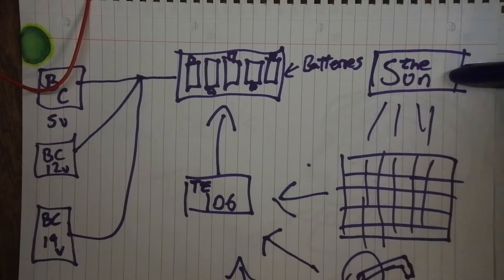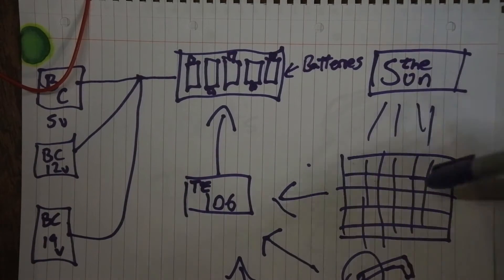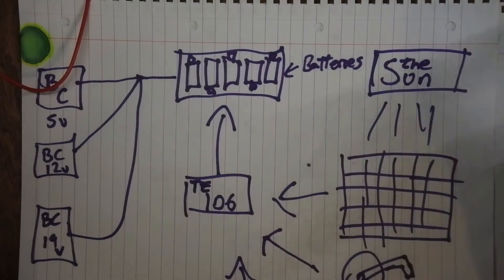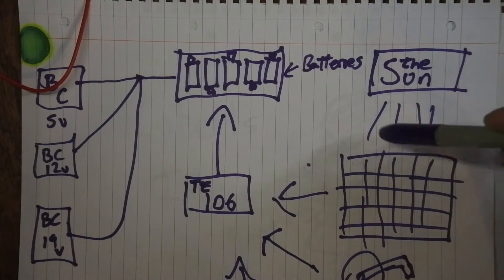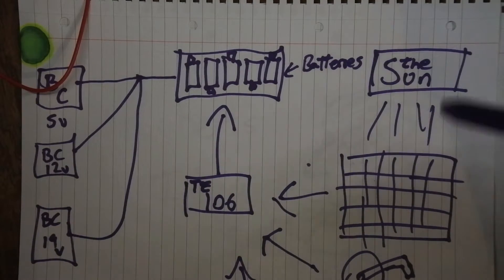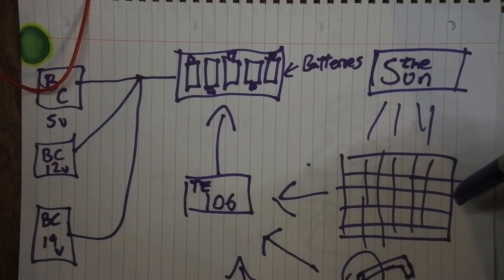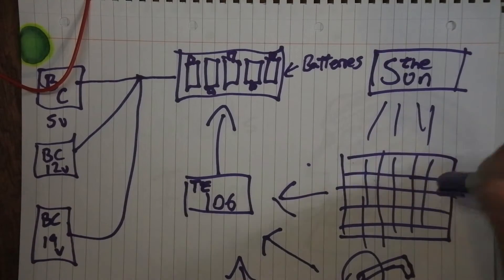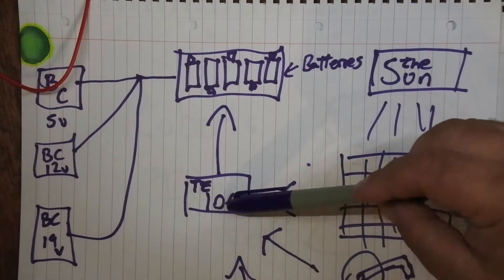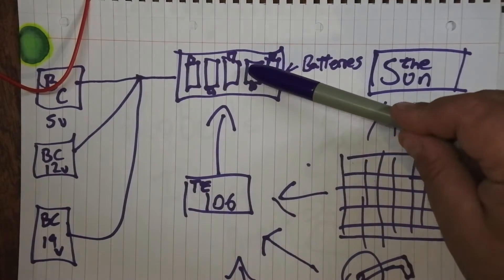So I've got the sun here coming in and there's a solar panel, but I don't just want solar panel to be able to charge this. So I'll just go for the whole diagram before explaining it. Sun comes into a solar panel, solar panel is connected to the USB of the TE106 that goes into the batteries.